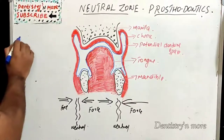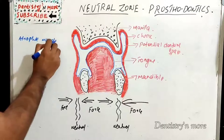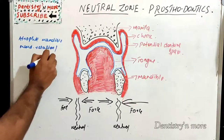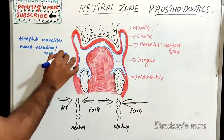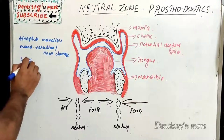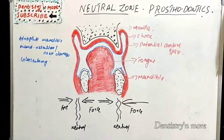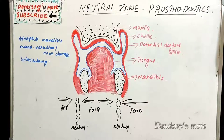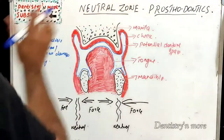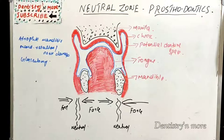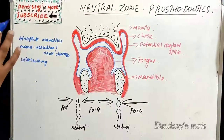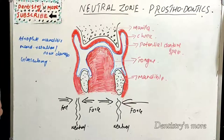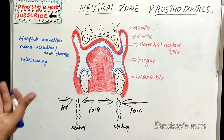This neutral zone approach has been used for patients with a highly atrophic mandible, patients with any type of mandibular resection or nerve damage, and patients with partial glossectomy. These patients have unfavorable denture-bearing areas, so we need to use the neutral zone approach for fabrication of dentures. If the denture is placed in the neutral zone, it will be retained more effectively during function. If kept outside the neutral zone, it will be unstable during activities of talking, swallowing, and mastication.